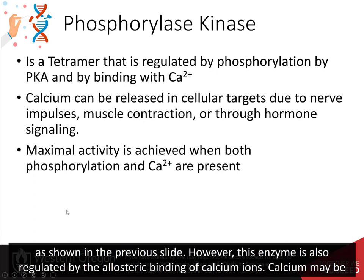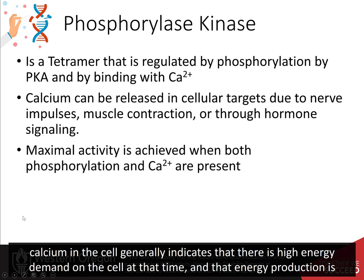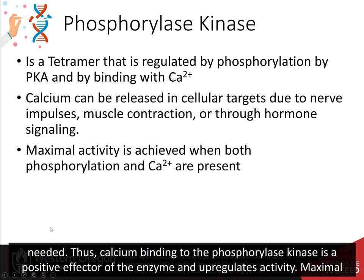However, this enzyme is also regulated by the allosteric binding of calcium ions. Calcium may be present within cellular targets due to nerve impulse firing, muscle contraction, or through hormone signaling. The presence of calcium in the cell generally indicates that there is high energy demand on the cell at that time and that energy production is needed. Thus, calcium binding to phosphorylase kinase is a positive effector for the enzyme and upregulates activity.